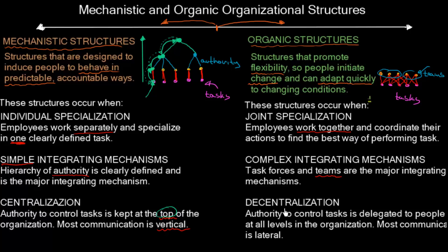In organic structures, we have decentralization — authority to control tasks is delegated to people at all levels, and most communication is lateral, also called horizontal communication. So when a task comes in, the team discusses it together and solves it without needing to escalate to the CEO.